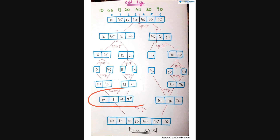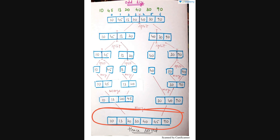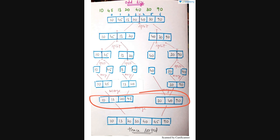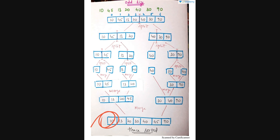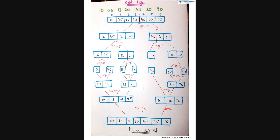Finally, we combine both sorted halves — 10, 13, 20, 45 and 30, 40, 90 — into one single sorted array. Comparing in order: 10, then 13, then 20, then 30, then 40, then 45, then 90. So the final sorted order is 10, 13, 20, 30, 40, 45, 90.